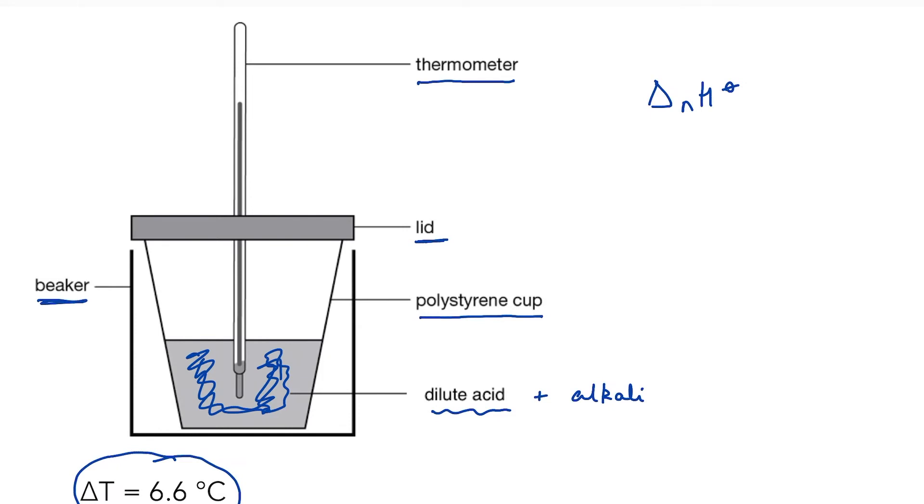Well, what we do is we add just the acid to our beaker and we take the temperature every minute for five minutes. The idea is that the temperature doesn't change. We then add the alkali. And again, we take the temperature every minute until there's no change. And this is the important bit. We then keep taking the temperature every minute while it cools, say for five minutes worth of cooling.